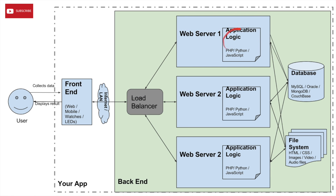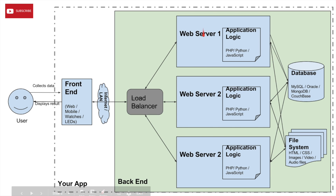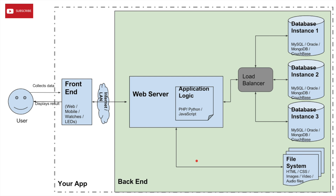The load balancer forwards the request to the web server, which processes the data. All of these web servers can interact with the same shared file system and database — they can all access the shared data. If a server needs data from the database or file system, it requests the resource, gets it back, forwards the response to the load balancer, and then it goes out to the user in the normal way.